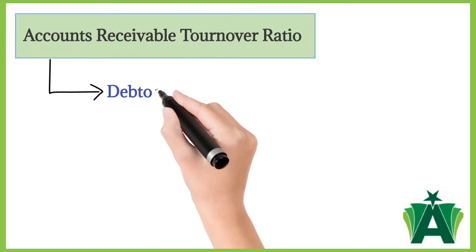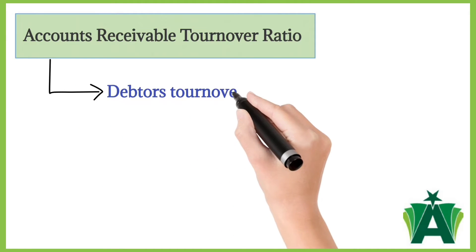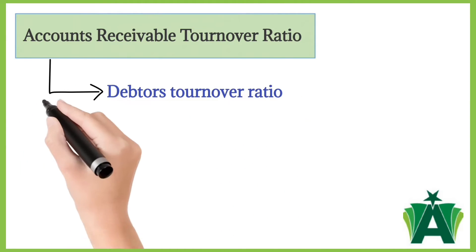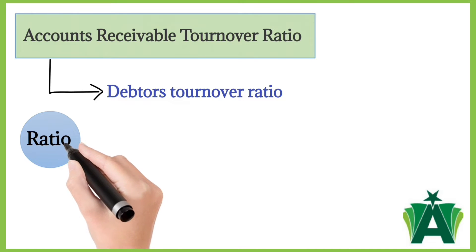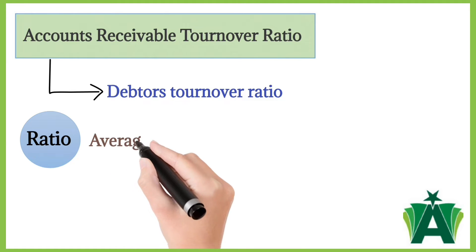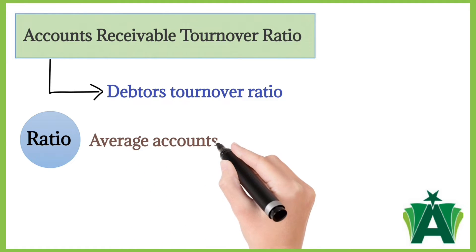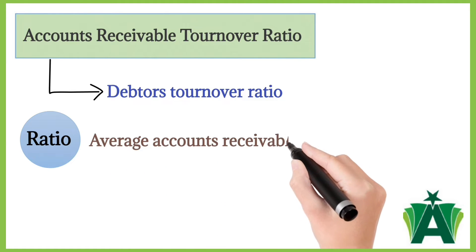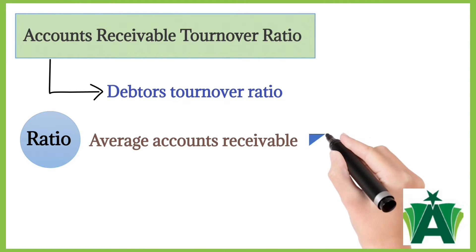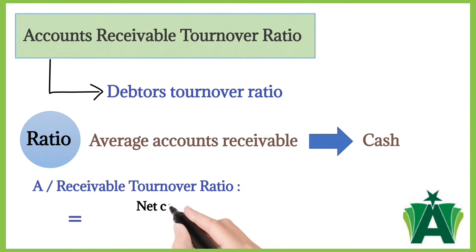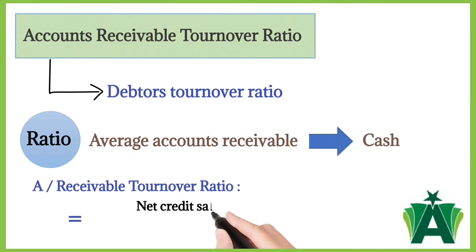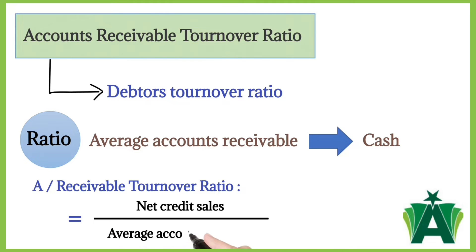The Accounts Receivable Turnover Ratio, also known as the Debtor's Turnover Ratio, is a financial ratio that measures how many times a company converts its average accounts receivable into cash during a specific period. It is calculated as net credit sales divided by average accounts receivable.